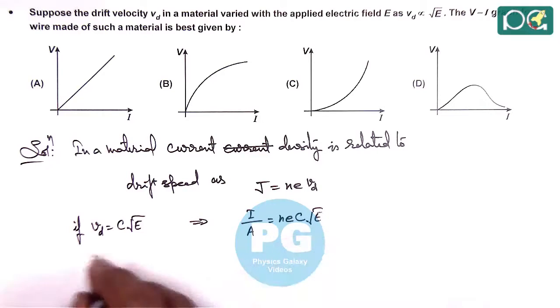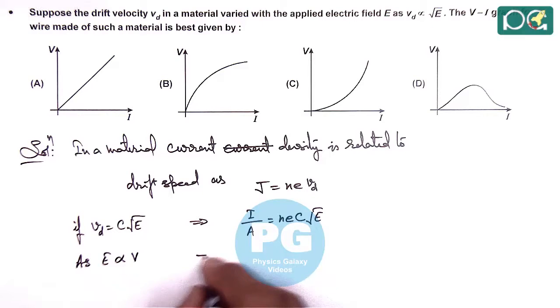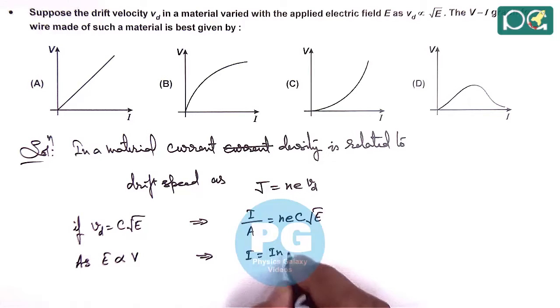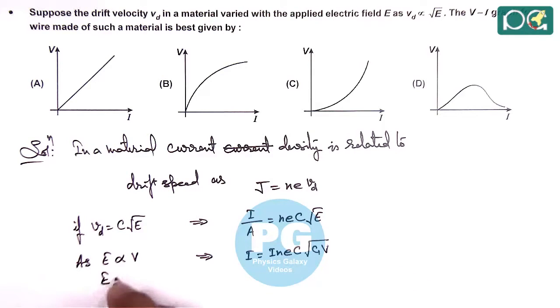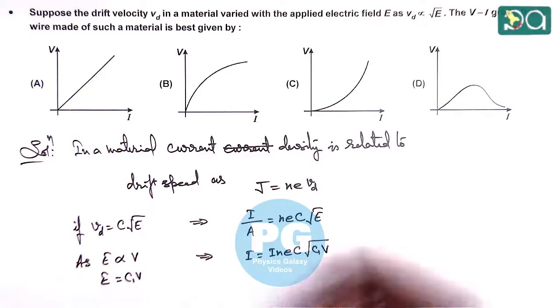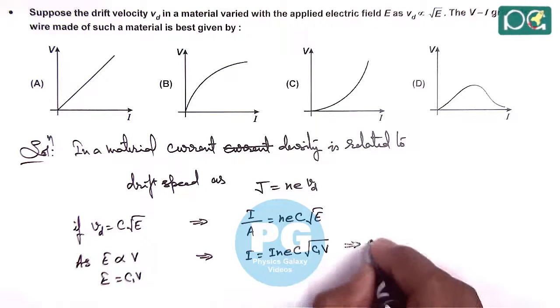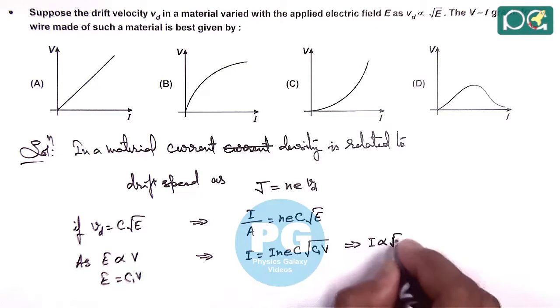And here, as we know, electric field is directly proportional to the applied potential difference. So here we can write current in terms of these constants. Root E can be written as root of some other constant C1V, or we can write E equals C1V. So here we are getting current as directly proportional to root V.